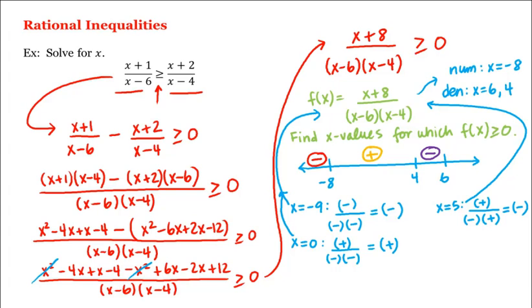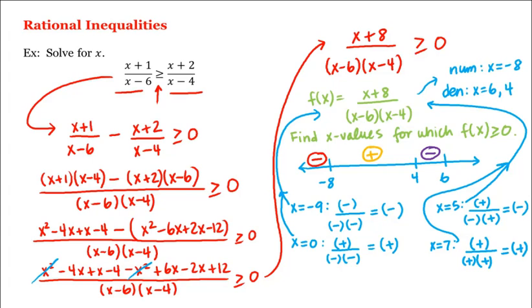And what about the last interval? We can choose x equal to 7, for example. Plugging 7 into the factored form of f, we have 7 plus 8, which is a positive number, divided by 7 minus 6, which is also a positive number, times 7 minus 4, which is also positive. And positive divided by positive times positive is positive, which means in this last interval, f is positive.